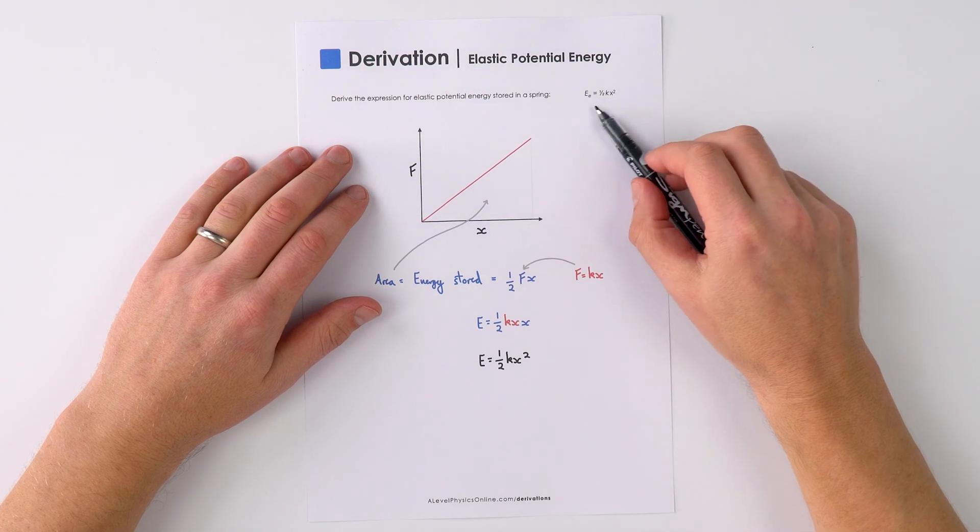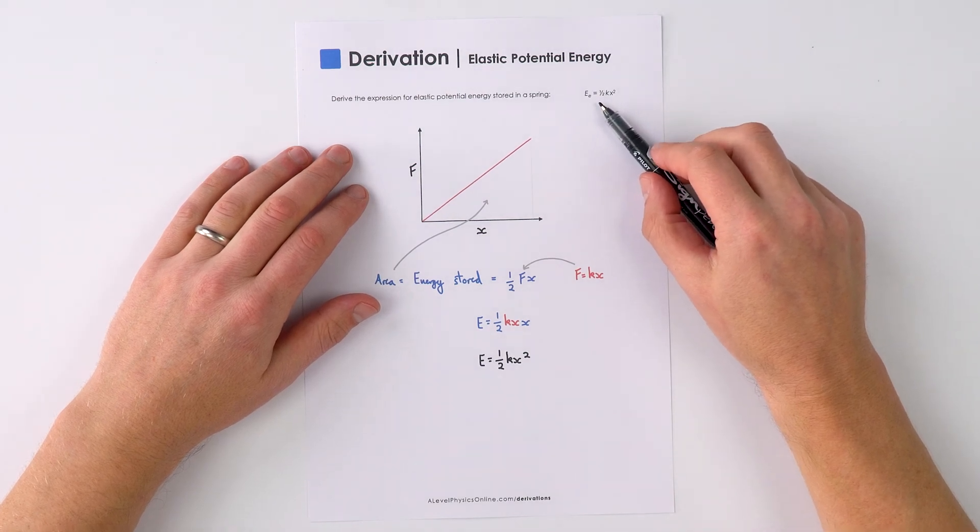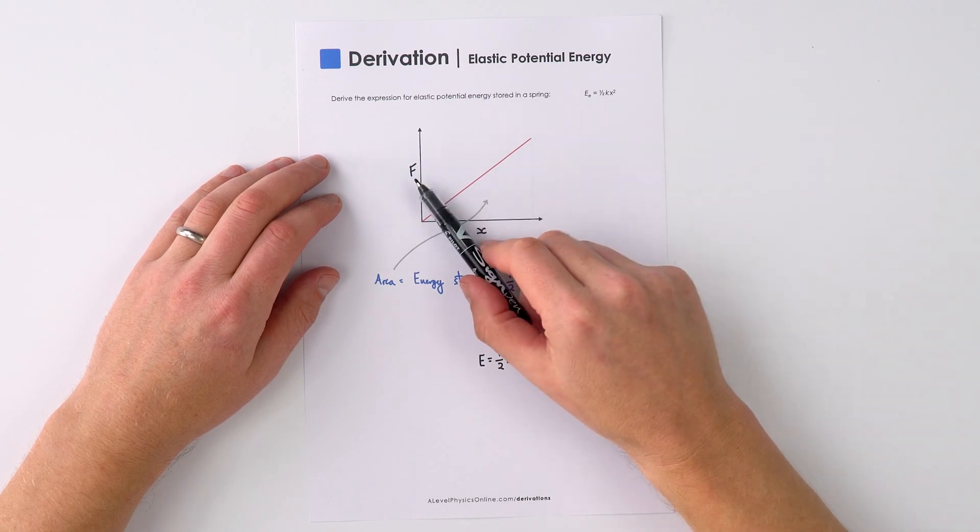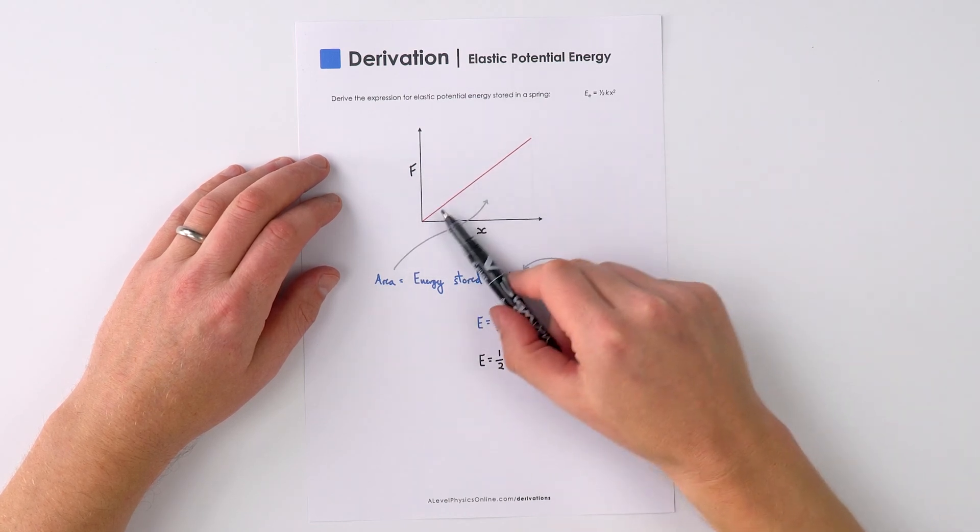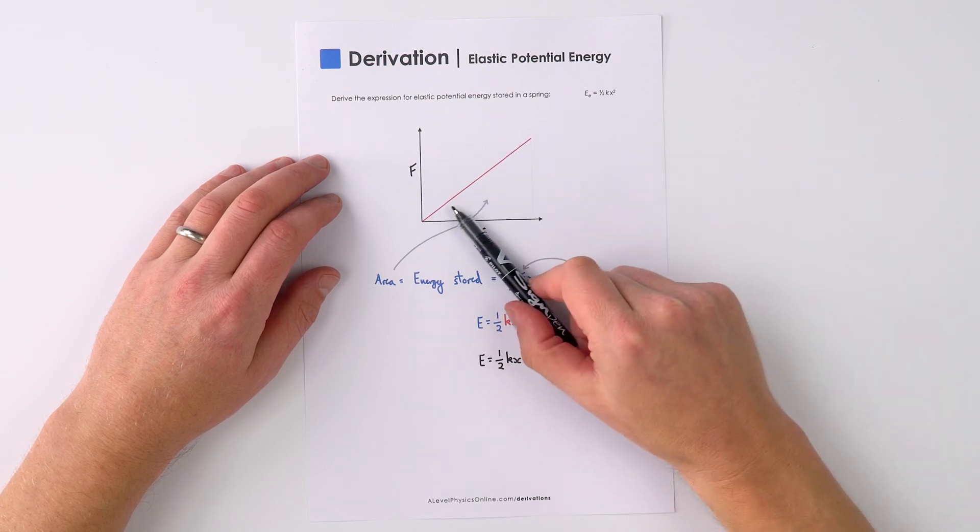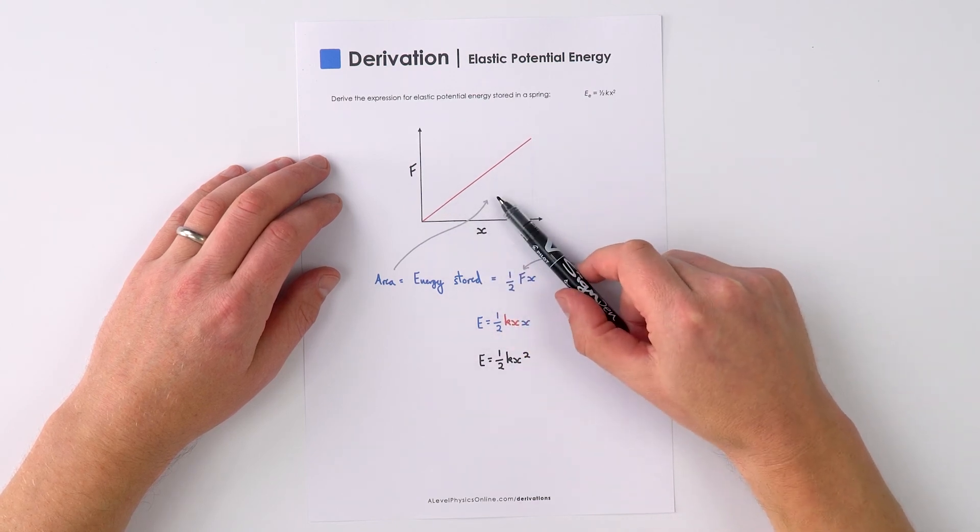So this is how to quickly derive the equation for the elastic potential energy stored by a spring. Now if we were to look at the force applied and the extension of that object, we'd see this linear graph like this, and the area underneath the line is equal to the energy stored.